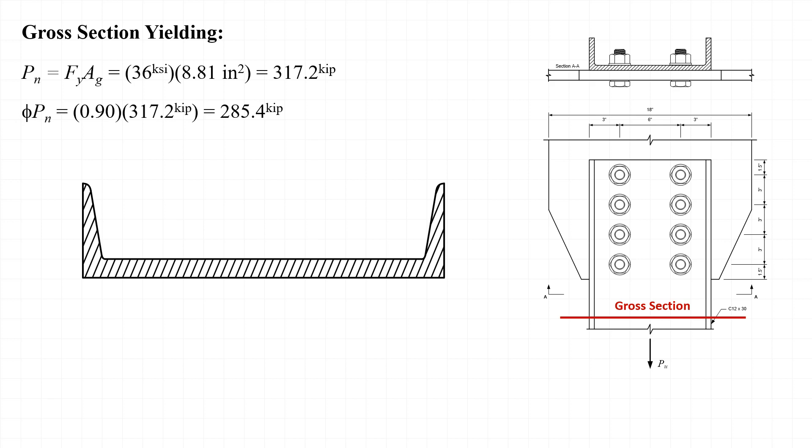When we apply the resistance factor for yielding, 0.9, we see that the design strength phi times P sub n is equal to 285.4 kips.